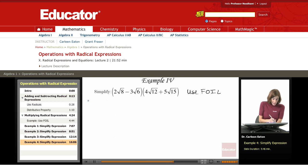So that's going to give me the first term, 2√8, times the other first term, 4√12, plus the outer two terms, 2√8 times 5√15, the inner terms, plus -3√6 times 4√12, and then finally the last terms, -3√6 and 5√15.